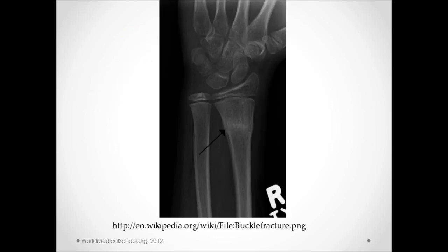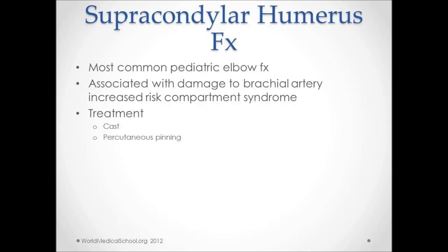Supracondylar humeral fractures are the most common pediatric elbow fracture, tending to occur between five and eight years of age. Proximity to the brachial artery increases the risk of Volkmann's contracture, resulting from compartment syndrome of the forearm. Treatment includes casting and percutaneous pinning.